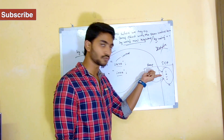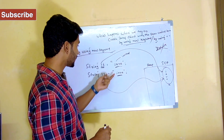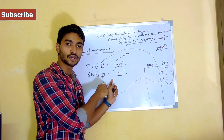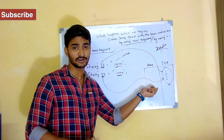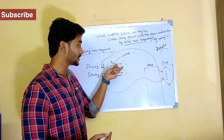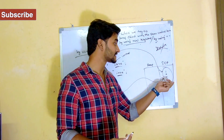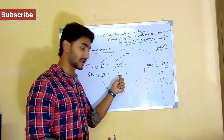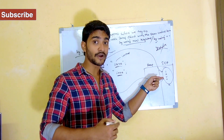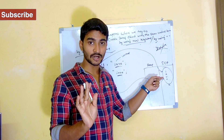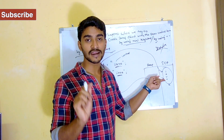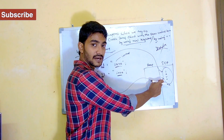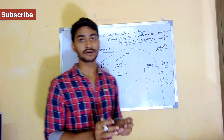Whenever we try to create two different objects with the same content using double quotes, there is no new keyword, so there is no chance of creating any object inside the heap memory. Since I'm creating it using double quotes, it's a string constant, so it goes into the string constant pool. Whenever I try to create another object with the same content, JVM checks the string constant pool for whether an object with that content already exists, and if yes, it will never create another object. Rather, it will refer to the same object already created. This is what happens behind the scenes.